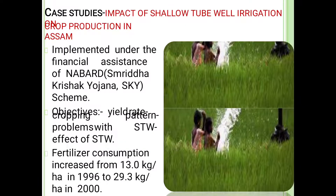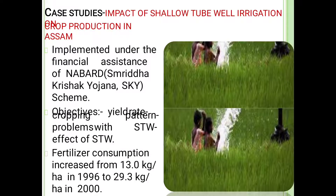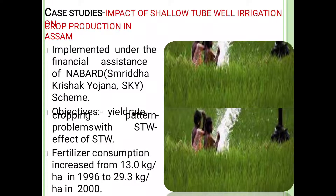Case study — impact on shallow tubewell (STW) irrigations and crop production in Assam, implemented under the financial assistance of NABARD, i.e., National Agricultural Bank for Rural and Agriculture Development, under the Samridhi Krishyana (SKY) scheme. Objective: yield rate, pattern of problems with STW. Effect of STW: fertilizer consumption increased from 13.0 kg per hectare in 1996 to 29.3 kg per hectare in 2000.